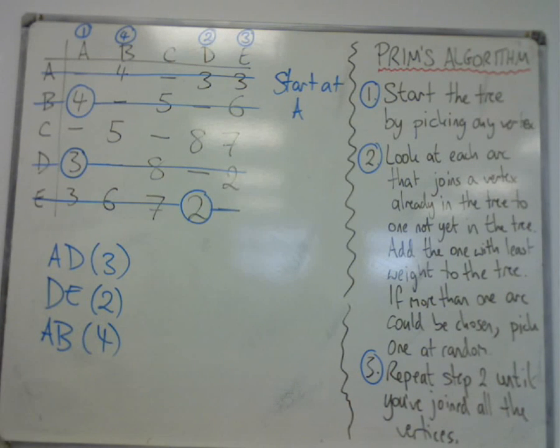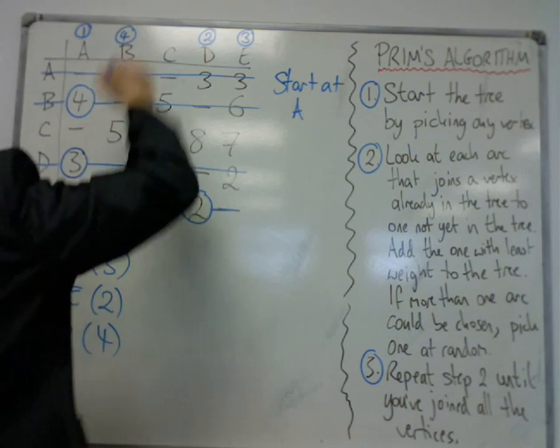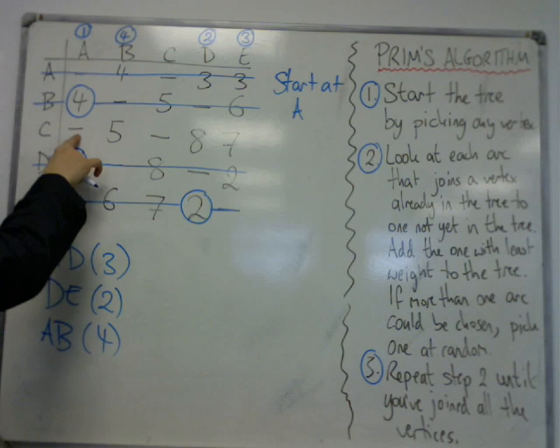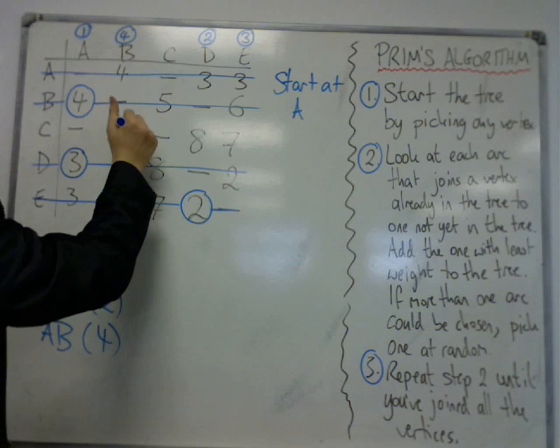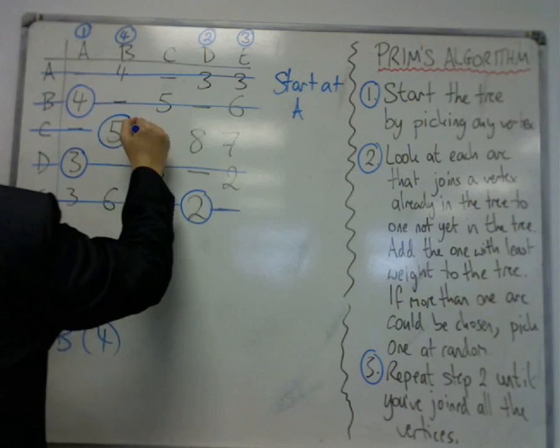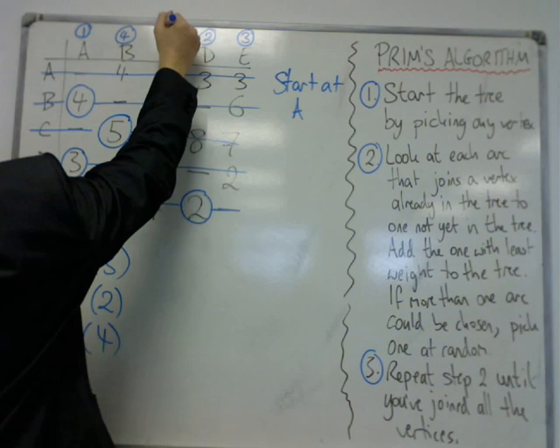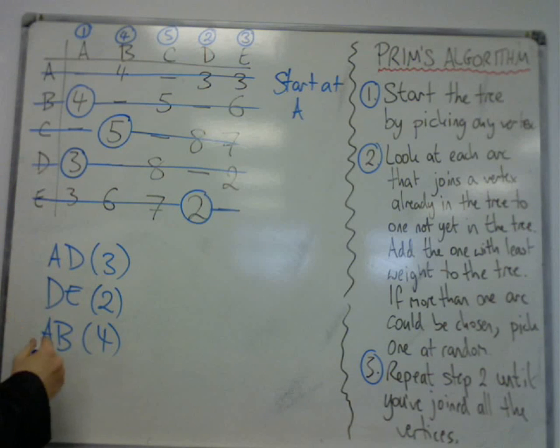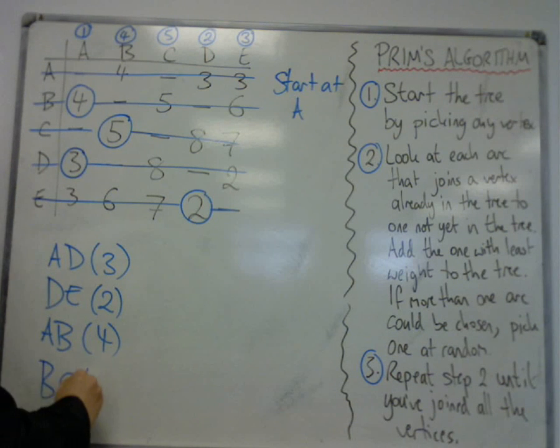And now I'm looking down A, B, D, and E. Now, there's nothing connecting left to connect A to. B is the shortest at 5. So, I circle 5, delete the rest of the row, make sure I write the number 5 on the top of C, and I've connected B, C there.